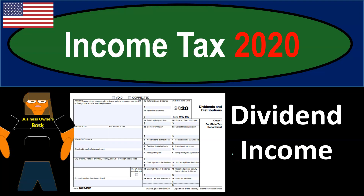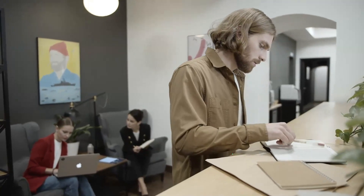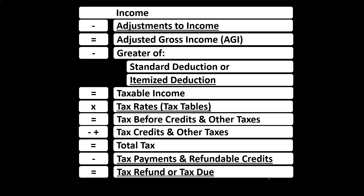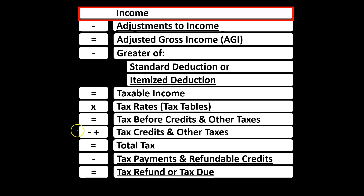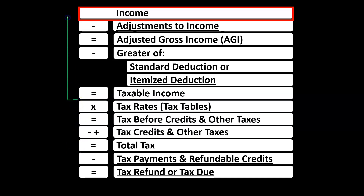Income tax 2020 — dividend income. When considering dividend income with regards to our income tax equation, we're up top in the income line item, breaking our income tax equation into basically two halves. The top half is a modified income statement; the bottom half is the calculation of the tax, then application of the payments and credits to get us down to the tax refund or amount due. We are focusing here on the top half — the income statement component — looking at a type of income: dividend income.